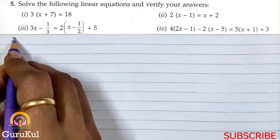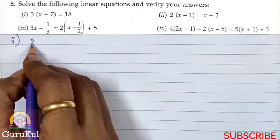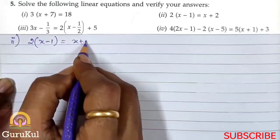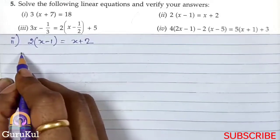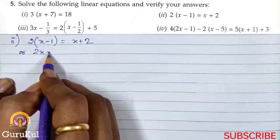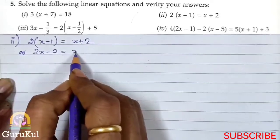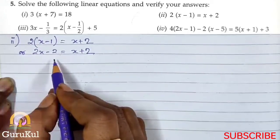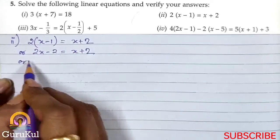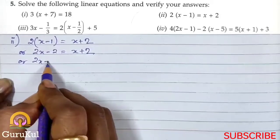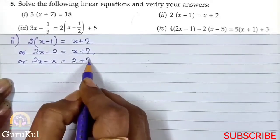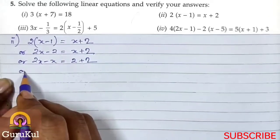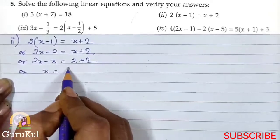Now the second part of this sum is 2 bracket x minus 1 bracket close is equal to x plus 2. When we open the bracket we get 2x minus 2 is equal to x plus 2. Bringing x to the left: x minus x gives x, and x is equal to 2 plus 2. So x is equal to 4.